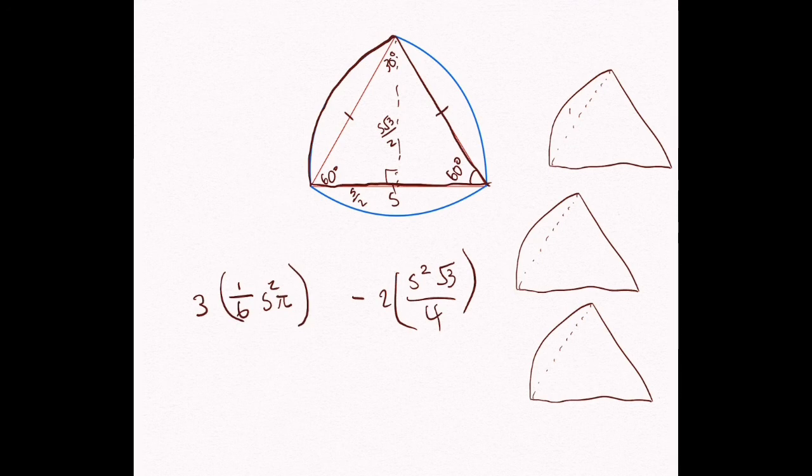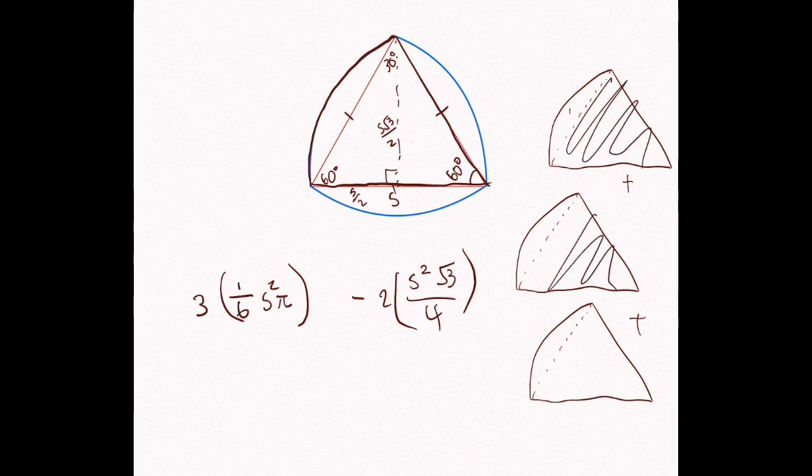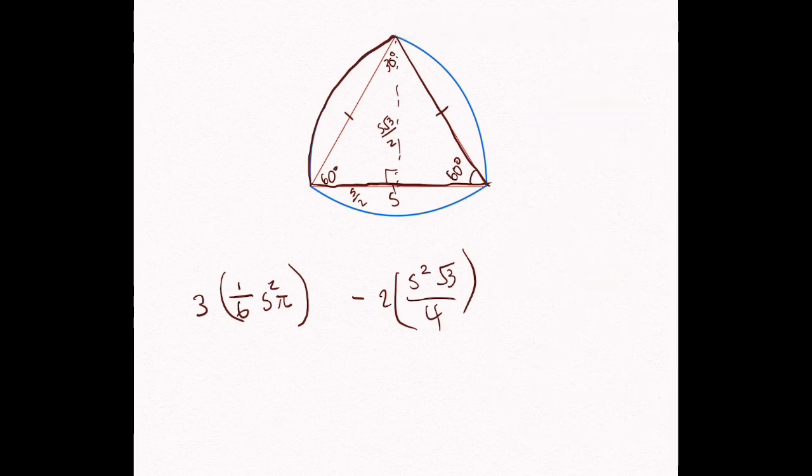So what we're essentially doing is we're adding all of these. But of course, we over counted. So we're getting rid of 2 of these to actually get the shape we want. I will delete this now. Alright, so now we can just use algebra and figure out the area, right?